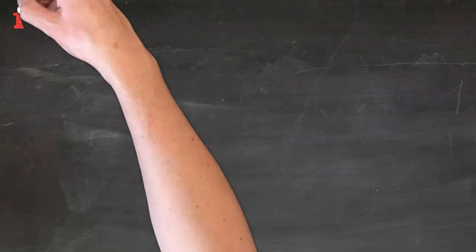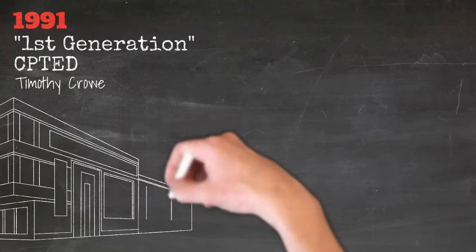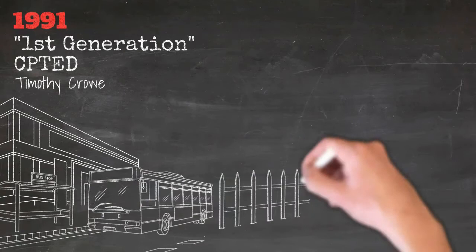In 1991, Tim Crowe combined ingredients from several past theories into a practical guide to CPTED. He asserted that the proper design and effective use of the built environment can lead to a reduction in the fear and incidence of crime, an improvement in the quality of life, and enhanced profitability.